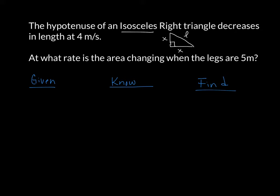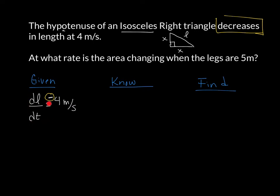The hypotenuse decreases in length at 4 meters per second, which is in reference to what I've labeled as L. So dL/dt is equal to negative 4 meters per second. Since it decreases, that is a negative. It's really important you don't forget this — anytime you have a decreasing rate, label it as negative. We say dL/dt is negative 4 meters per second, or that it decreases at 4 meters per second.